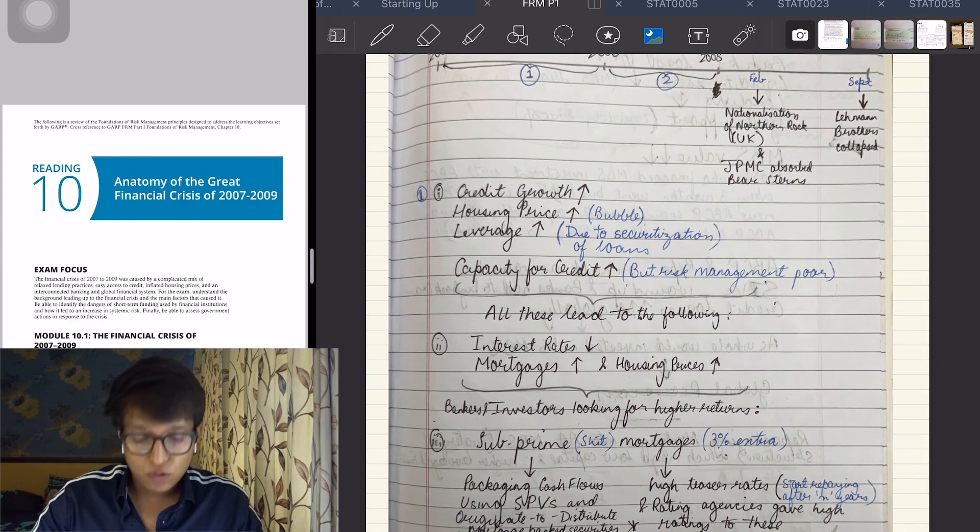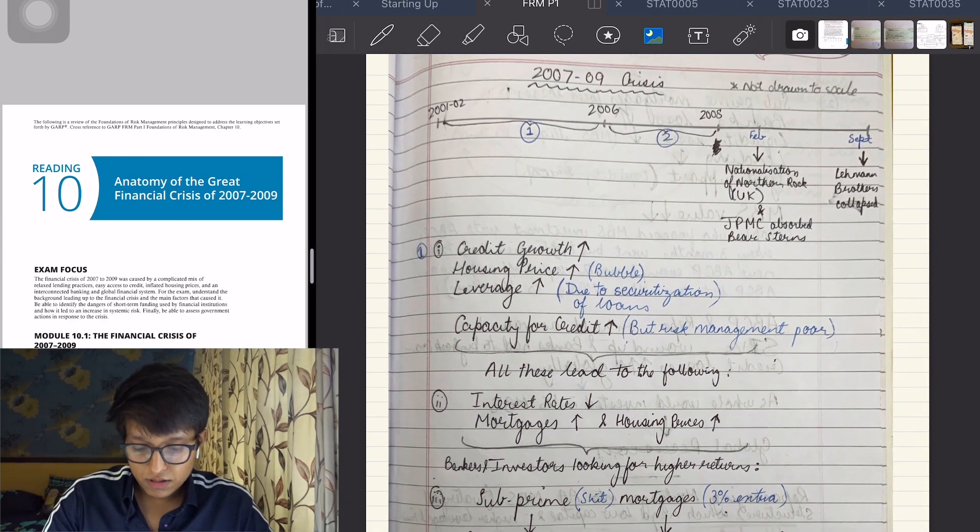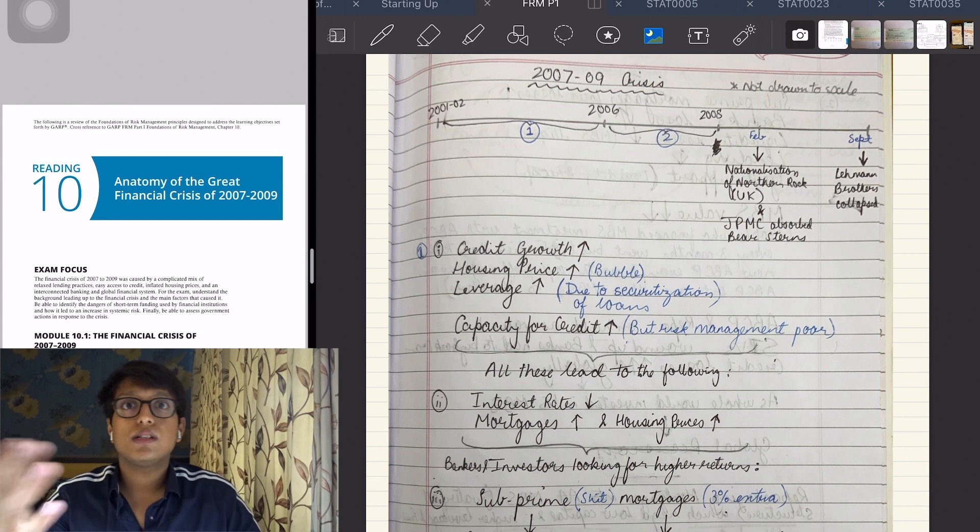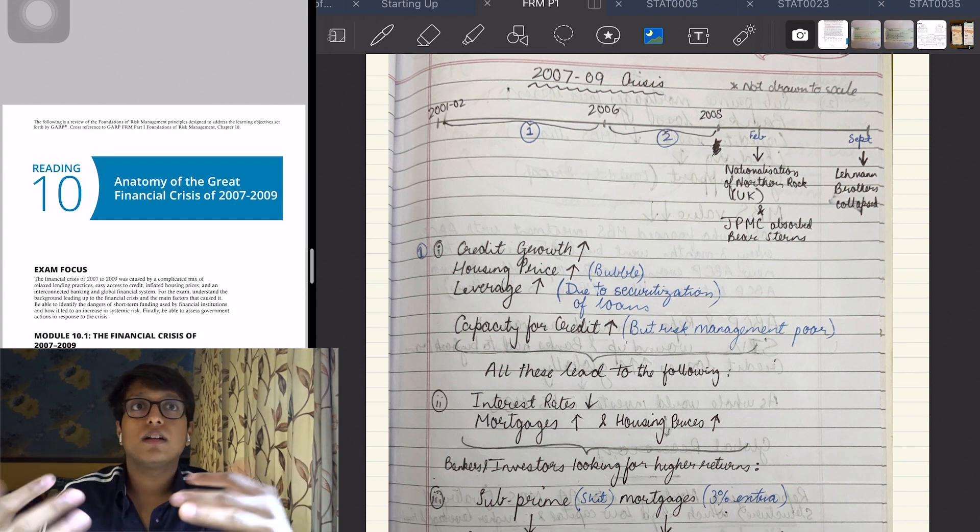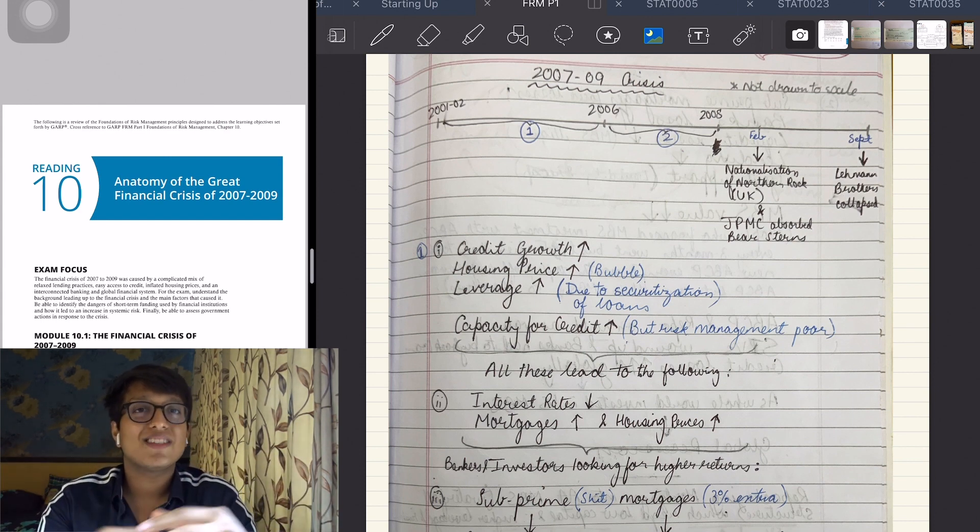What happened before the 2007 crisis was that credit growth was increasing because people were getting more access to loans. This was because interest rates were kept at historically low levels.